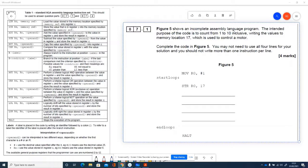So it shows an incomplete assembly language program, its intended purpose is to count from one to ten inclusive, writing the values to memory location 17 which is used to control a motor. We don't really care too much about what it's controlling but we're just going to write them to that memory location.